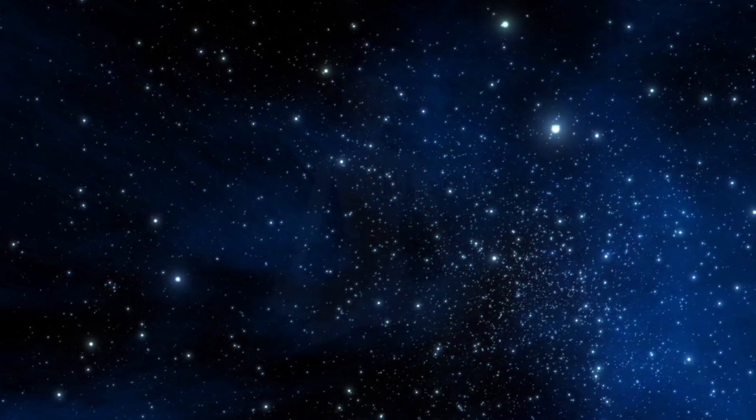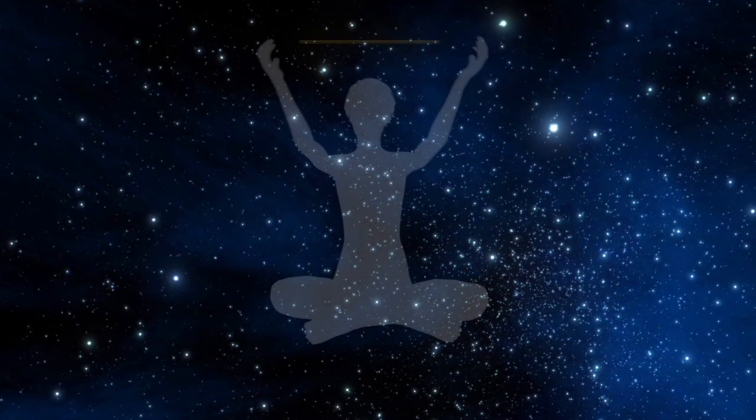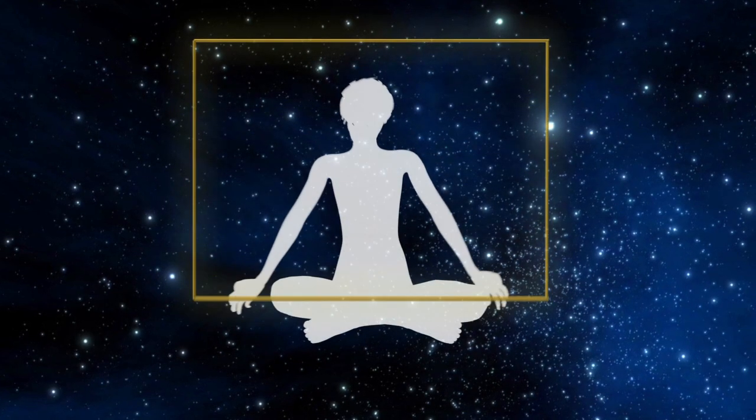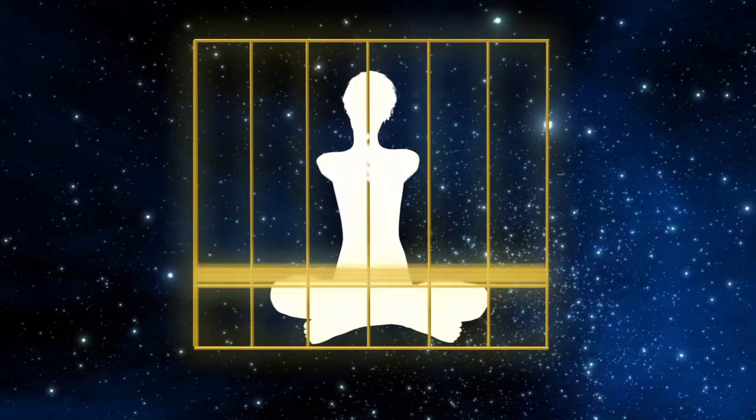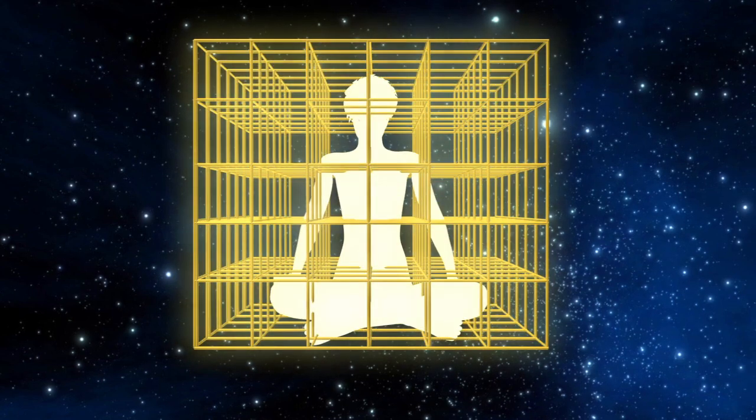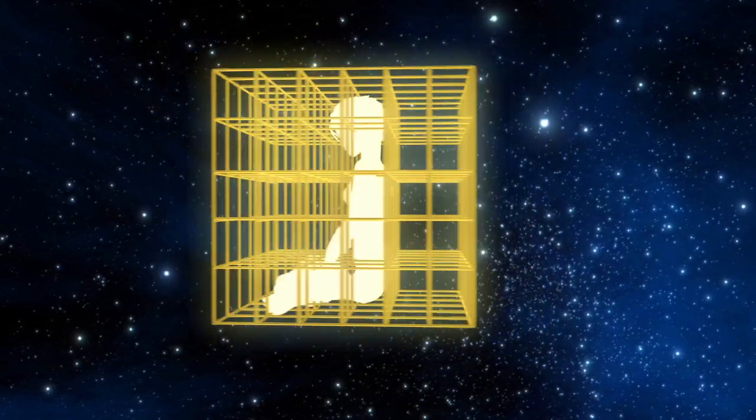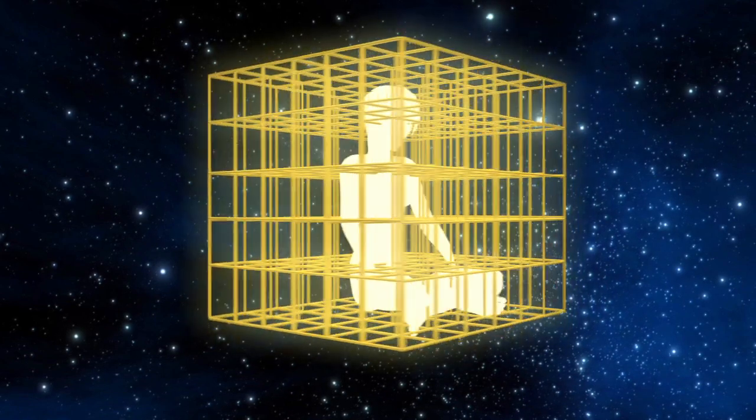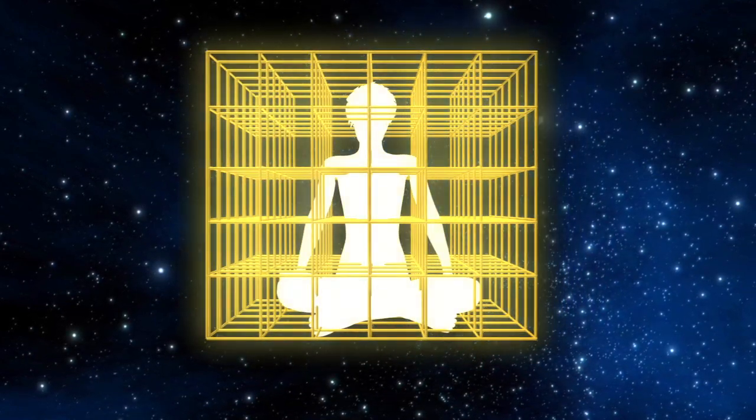Chambers of light are three-dimensional rectangular grids of light brought in primarily by different groups of Christed ETs in order to assist in the recalibration of the body, energy field and hologram.